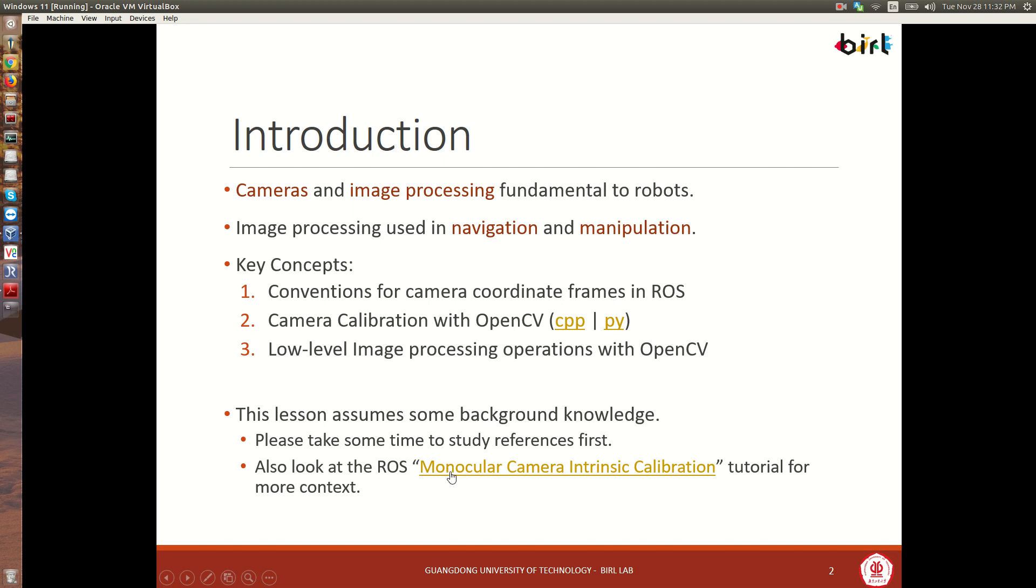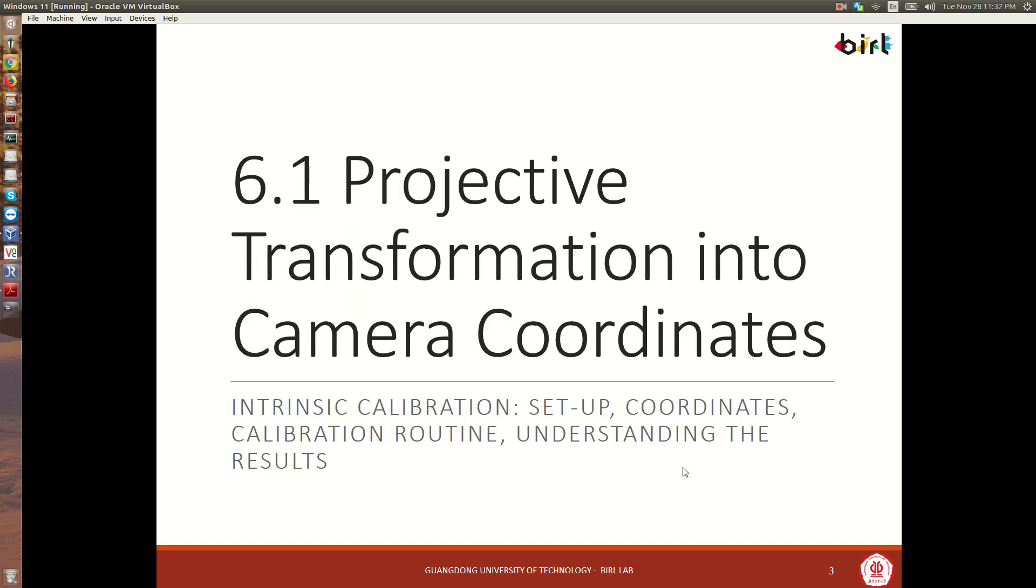There's also the ROS tutorial on monocular camera intrinsic calibration at this link, which will be useful to you also to review. So, in section 6.1, we're going to study something called projective transformation into camera coordinates. We're going to be looking at just how to set up the problem of calibration.